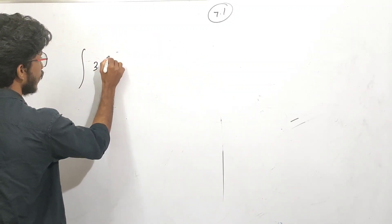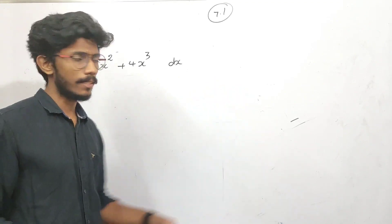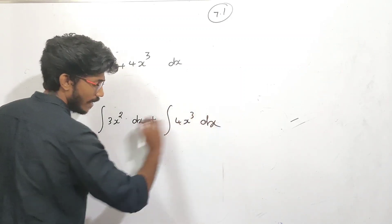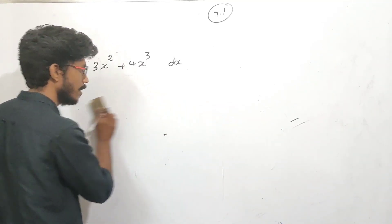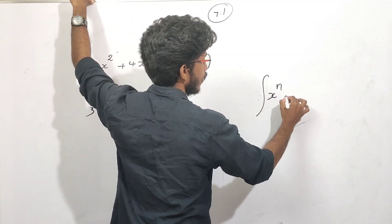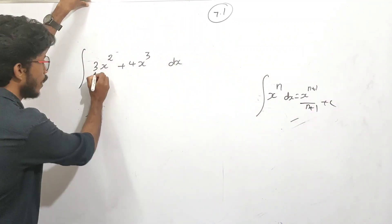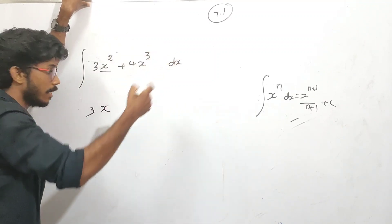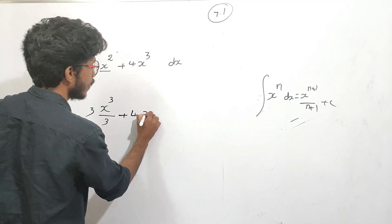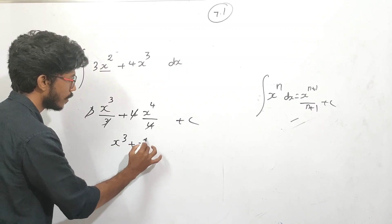Integral of 3x squared plus 4x cubed dx — split it: integral of 3x squared dx and integral of 4x cubed dx. Using the power rule, integral of x raised to n is x raised to n+1 by n+1. So: 3 is constant, x to power 2, becomes x raised to 3 divided by 3; plus 4 constant, x raised to 3 becomes x raised to 4 by 4. Result: x raised to 3 plus x raised to 4, plus c.